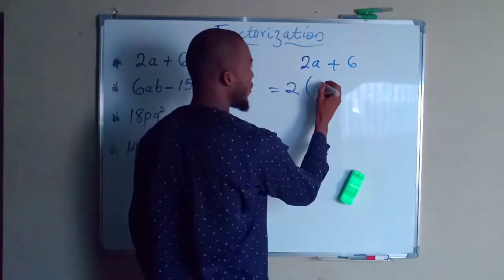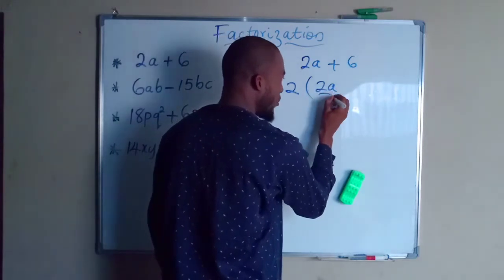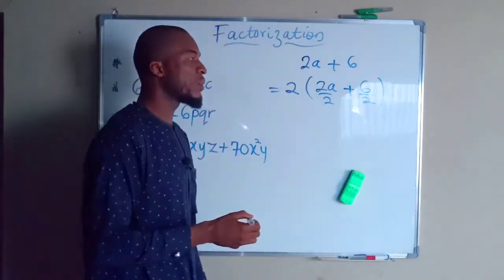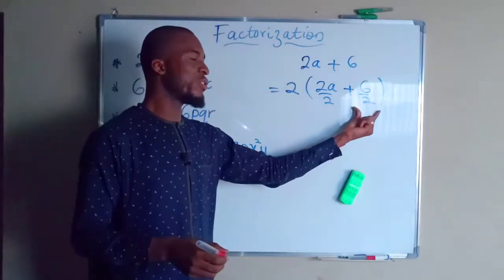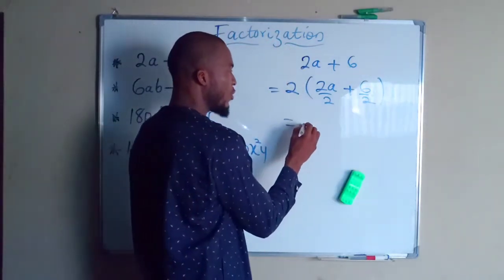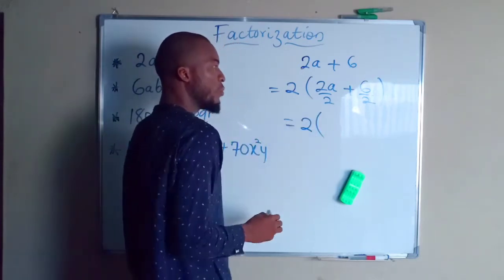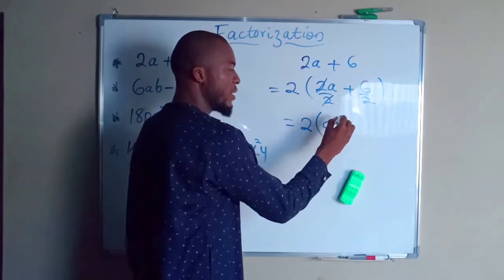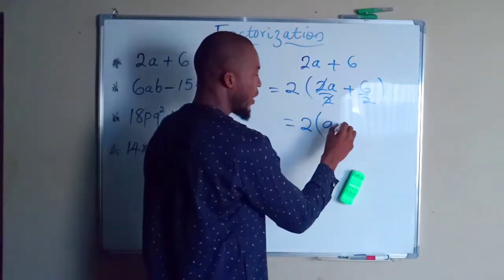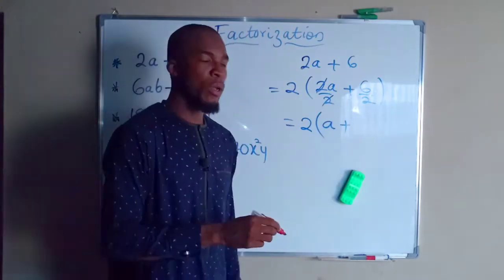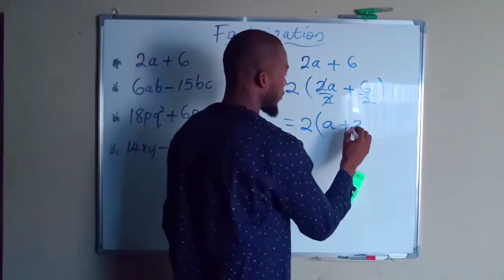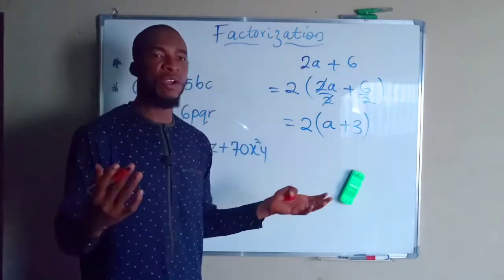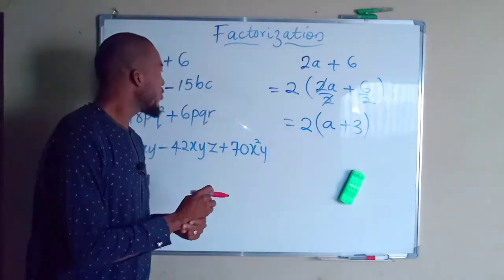So we are going to factor 2 out. In the bracket we have 2a divided by 2, plus 6 divided by 2. This reduces to: 2 multiplied by — 2a divided by 2 is a — on the first term, while on the second term 6 divided by 2 equals 3. So the factorized form is 2(a + 3). This is how you factorize terms that have a common factor.